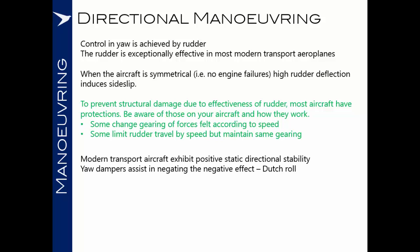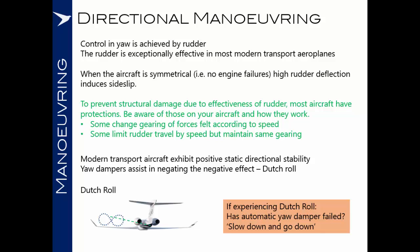Modern transport aircraft exhibit positive static directional stability, but this comes with its own risk of Dutch roll, so yaw dampers are fitted to negate this negative effect. Dutch roll is where the nose tracks a profile resembling an infinity sign — a figure-8 on its side. It can become divergent, so if you experience Dutch roll, check whether your automatic yaw dampers have failed. The rule of thumb: if you suspect Dutch roll, slow down and descend — decelerate and descend.